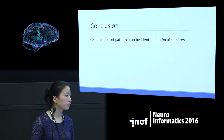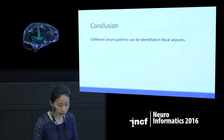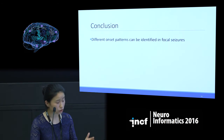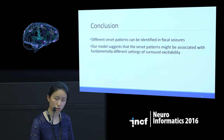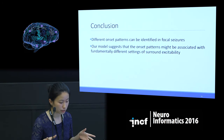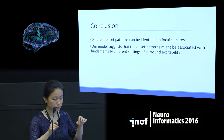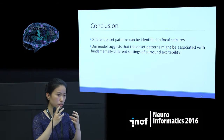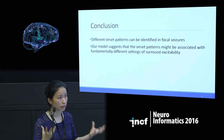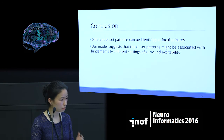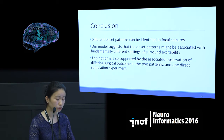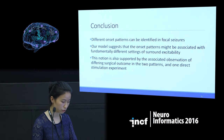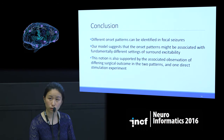To conclude: different onset patterns can be identified in focal seizures and categorised. Our model suggests the onset pattern is associated with fundamentally different settings of surround excitability — it's not how the micro-seizure clusters organise by themselves, but the surrounding healthy tissue that determines one case against the other. This notion is supported by evidence from the literature, from direct stimulation experiments and in terms of surgical outcomes in the two patterns.